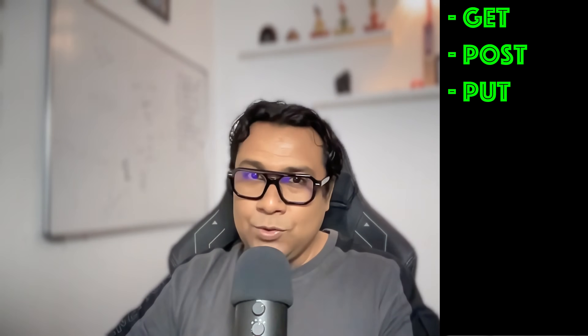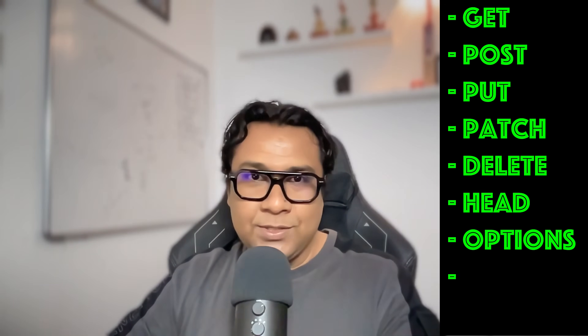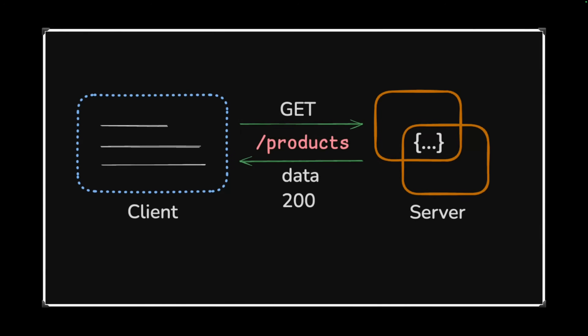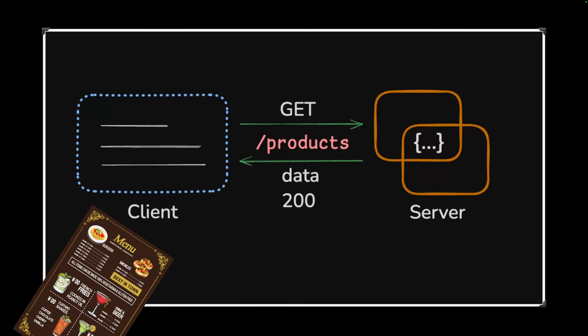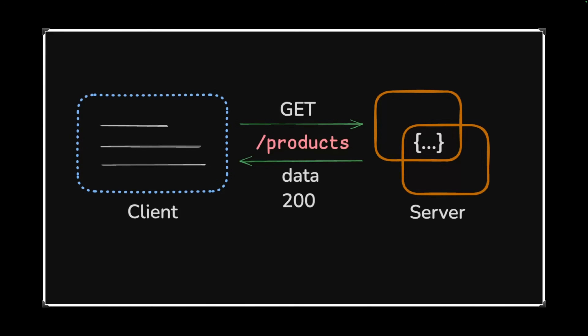The first method is GET. The purpose of GET is to retrieve data from the server. As we're seeing in this diagram, the client uses GET to retrieve product data from the server, and the product data comes back to the client. Think of it like reading a menu at a restaurant — you are just looking at the menu, not changing anything, not ordering anything, just understanding what the restaurant serves.